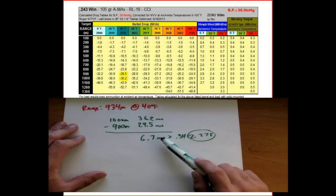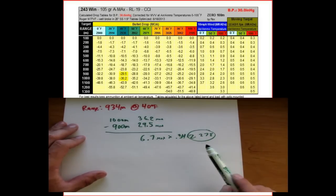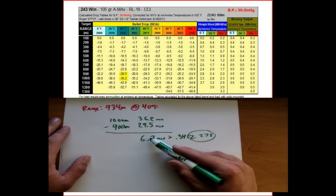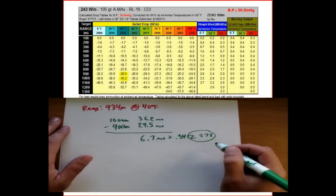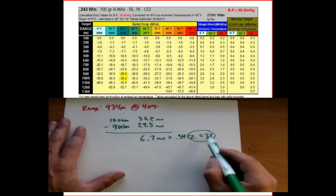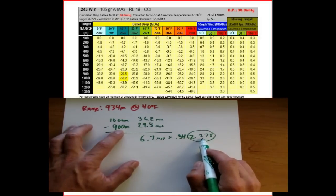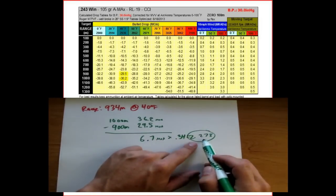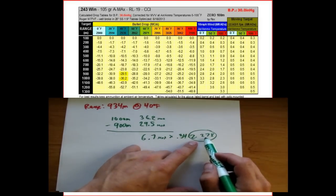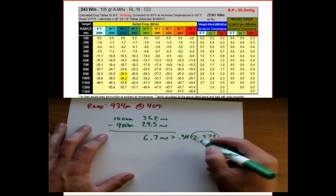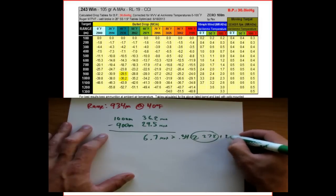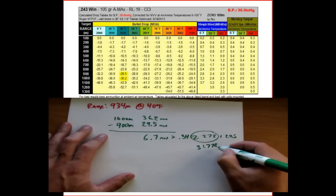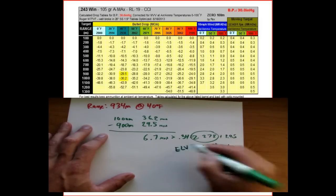Let's check that it makes sense — 934 meters, 34% of that difference should look about right. Just take a glance at your numbers and make sure they make sense. If you get a crazy number that doesn't seem like 34% of 6.7, then you did something wrong. So now that we have 2.278, we simply add this to the 900-meter drop of 29.5. Adding those together gives us 31.7 — that's our final elevation setting.